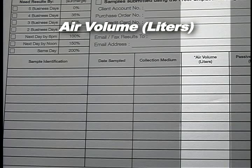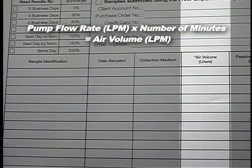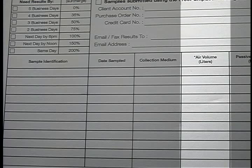Air Volume (Liters): Provide the air volume in liters for the associated sample. The air volume is the calculation of the pump flow rate in liters per minute multiplied by the number of minutes the pump was sampling to get the total liters sampled. You should consider the number of significant figures you provide — four significant figures would normally be the maximum that could be verified. The number you provide will be reported as part of your final report and we will not round it. If a passive monitor, bulk, or mini-can was used, or you do not want us to use the air volume to calculate your final concentrations, place an N/A in this column.